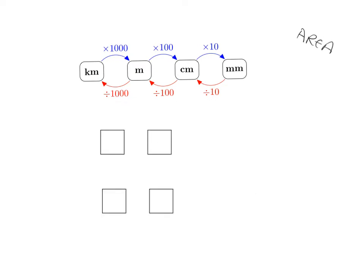For area, we can start with the same diagram but it works out a bit differently. If we have one centimeter squared, that's a square that is one centimeter by one centimeter, with an area of one centimeter squared. To convert to millimeters squared, we know one centimeter is ten millimeters, so the square becomes ten millimeters by ten millimeters. The area is ten times ten, which is a hundred — so one centimeter squared equals a hundred millimeters squared.